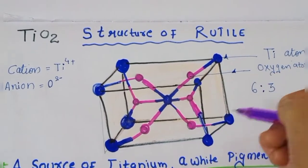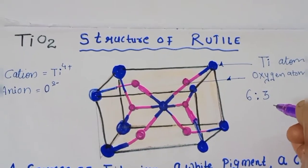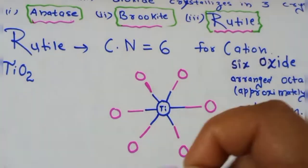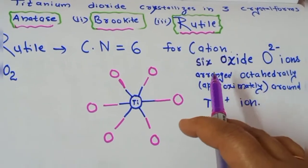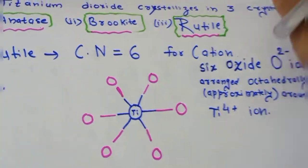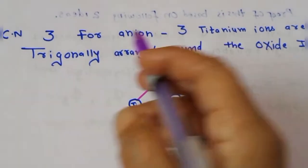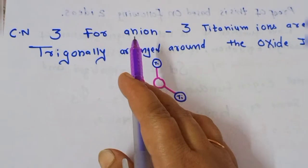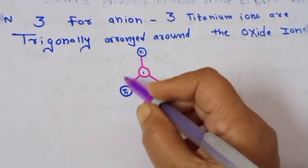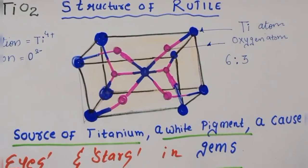Similarly, oxygen is coordinated with three titanium ions, so the coordination number of oxygen is three. To summarize: for rutile, the coordination number for the cation (Ti⁴⁺) is 6, and the six oxide ions are arranged octahedrally around the titanium. For the anion (O²⁻), the coordination number is 3, and three titanium ions are arranged trigonally around the oxide ion.